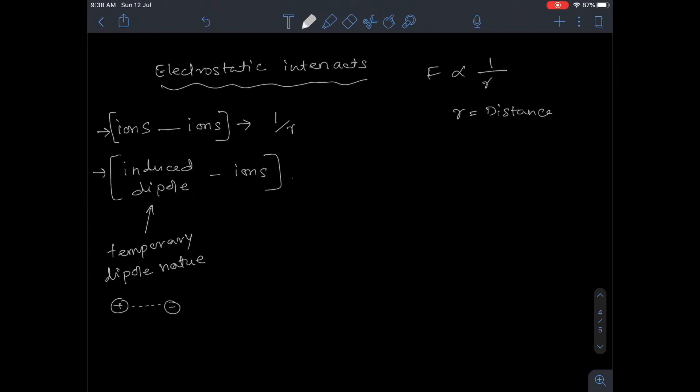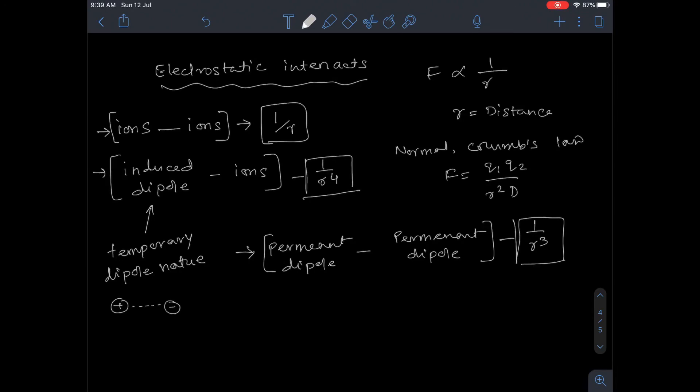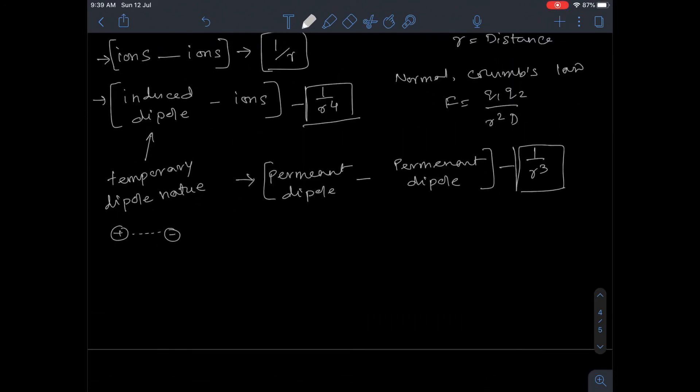then the energy will fall by 1/r⁴. If the interaction is between permanent dipole and permanent dipole, then the energy will fall by 1/r³. Whereas normally, according to Coulomb's law, F = q1q2/r²d, meaning energy should fall by 1/r². These are the different values to remember while solving mathematical problems.